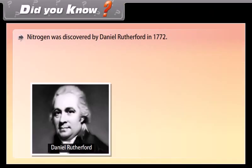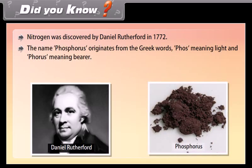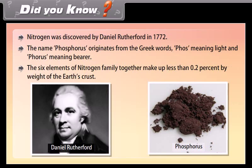Nitrogen was discovered by Daniel Rutherford in 1772. The name phosphorus originates from the Greek words 'phos' meaning light and 'phorus' meaning bearer. The six elements of the nitrogen family together make up less than 0.2% by weight of the earth's crust.